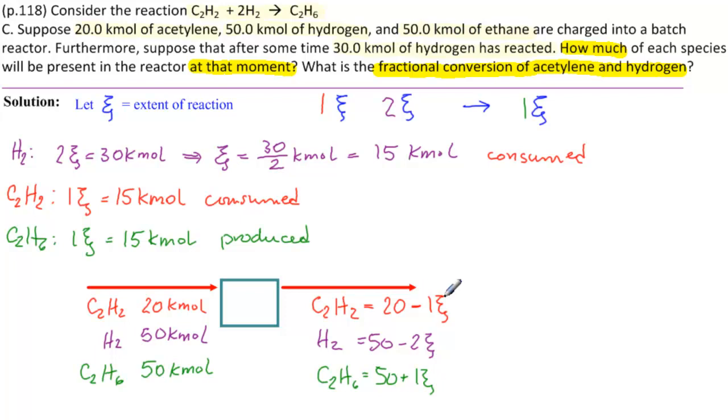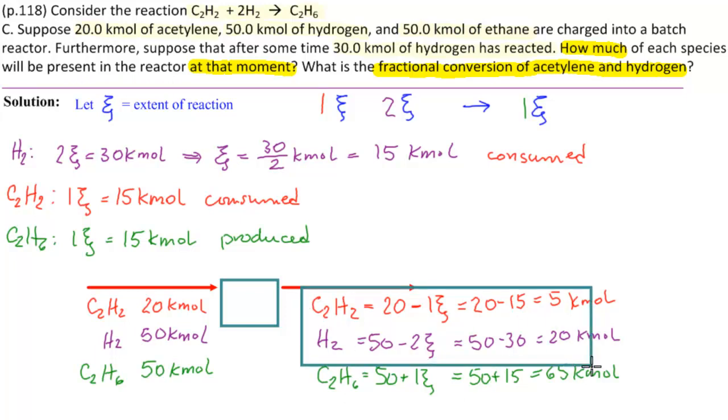So if we calculate these by what we have, we get 20 minus 15, means that 5 is left. Here we have 50 minus 30, which means 20 kilomoles is left. And here we have 50 plus 15 equals 65 kilomoles. So the answer to how much of each species is present in the reactor at that moment is this part, right here.